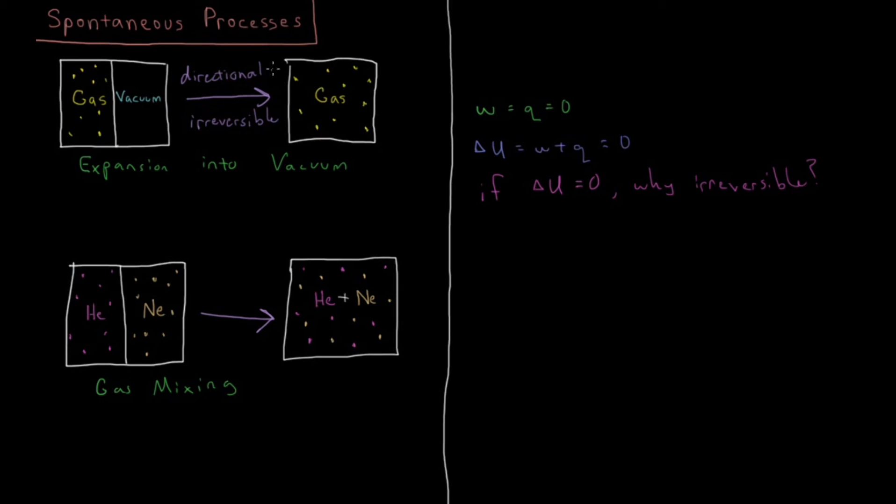Well what we can look at qualitatively is that there's more disorder in the final states here than in the initial states. So here the gas is more ordered. It's located on the left side whereas there's more uncertainty about where it's located in this final state. The gas can be spread throughout the container so you have less information about where the gas is. It's more disordered. You know less about where the gas particles are.